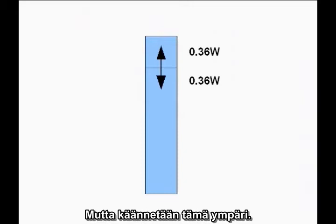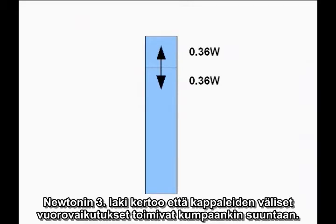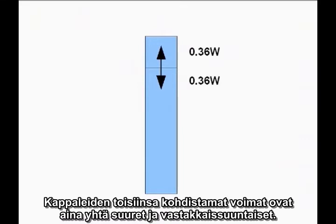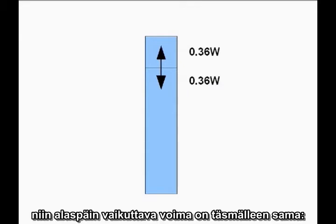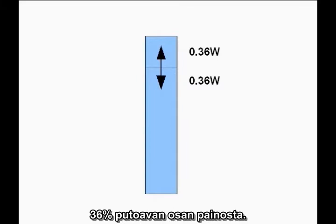But now turn it around. Newton's Third Law says interactions between objects work both ways. The forces two objects exert on each other are always equal and opposite. If the upward force acting on the falling block is 36% of the weight of the falling block, the downward force exerted by the falling block must be exactly the same — 36% of the weight of the falling block.